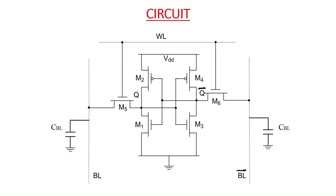This is the circuit of the SRAM cell of six transistors. M2 and M1 form one inverter, and M4 and M3 form the second inverter. This is a cross-coupled inverter because the output of the inverter formed by M2 and M1 goes as input to the inverter formed by M4 and M3, and vice versa. M5 and M6 are NMOS transistors connected to the word line. These are also connected to the bit lines — BL and BL bar. The output of M2 and M1 is called Q bar, and the output of M4 and M3 is called Q.